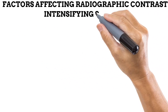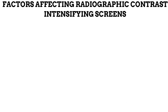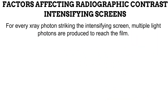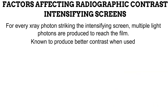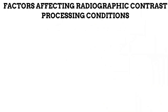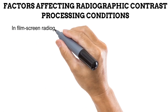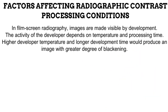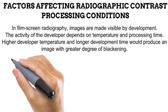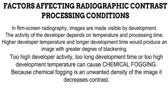The next factor is the use of intensifying screens, which applies only to film screen radiography. When intensifying screens are used, a multiplier effect on photon production occurs, and they have also been observed to produce greater contrast compared to when they are not used. Also applying only to film screen radiography are processing conditions. Images are made visible through a process called development, and the activity of the developer chemical depends on temperature and development time. At high temperatures and long development times, great density is recorded. However, if developer activity is too high due to excessive temperature or time, chemical fogging occurs — the formation of useless densities on the image — which decreases radiographic contrast, just as scattered radiation does.